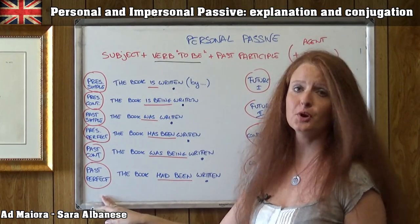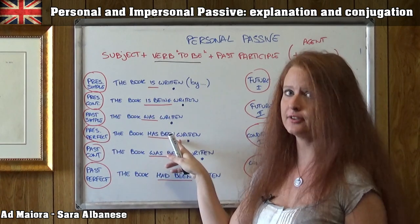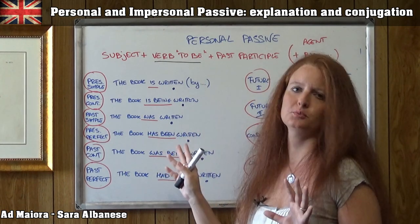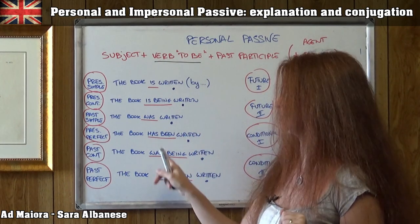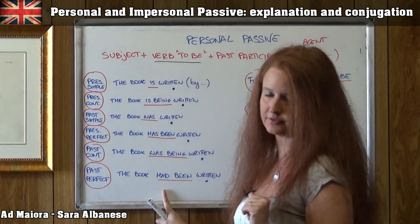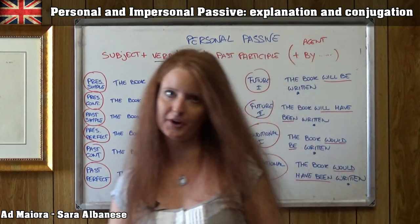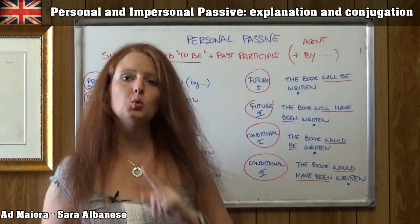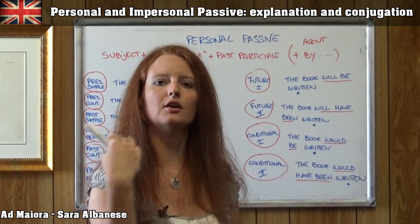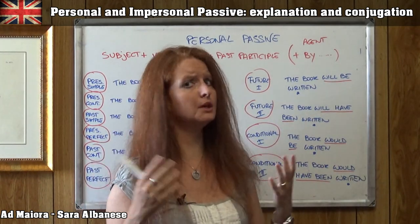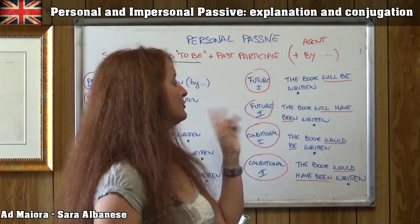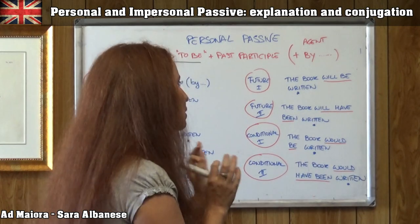Then the past perfect — same structure as the present perfect, I just have to change 'has' to 'had,' the past of the auxiliary 'to have.' So: 'the book had been written.' Then future one: 'the book will be written.' 'Will' wants a base form after it, and the base form of the verb 'to be' is simply 'be.' So: 'the book will be written.'